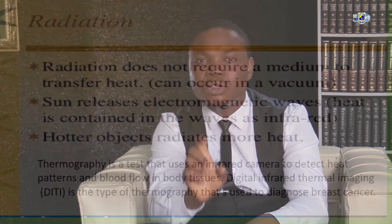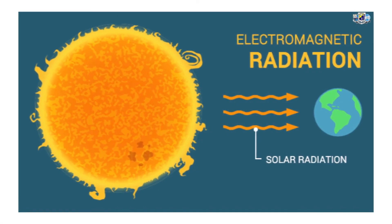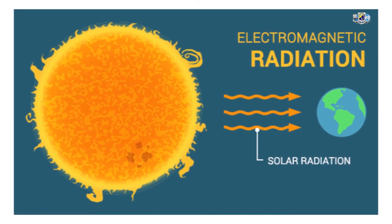The third mode of heat transfer is radiation. This mode does not require a material medium. For instance, thermal energy from the sun reaches us on Earth via infrared radiation. Hotter objects radiate energy more and absorb thermal energy less. On the other hand, cold objects absorb thermal energy more and radiate thermal energy less. This is because the amount of energy absorbed or radiated depends on the temperature difference between the body and its surroundings.